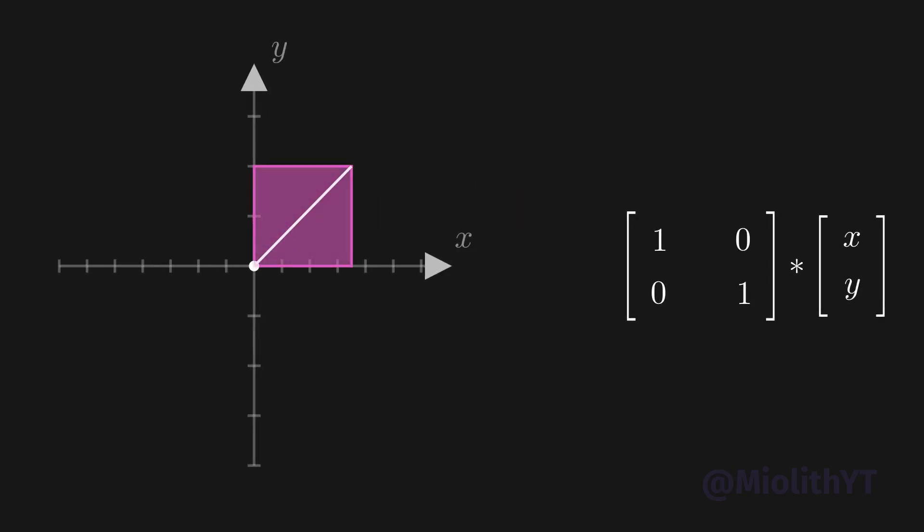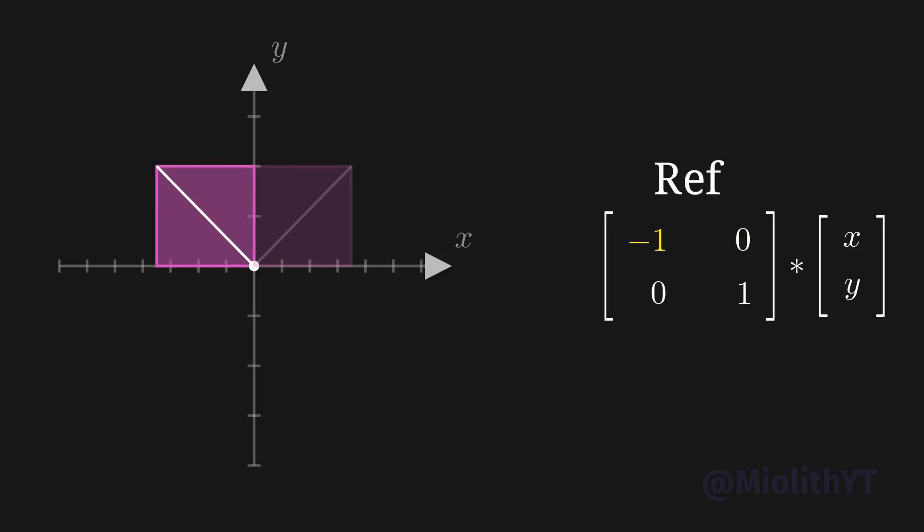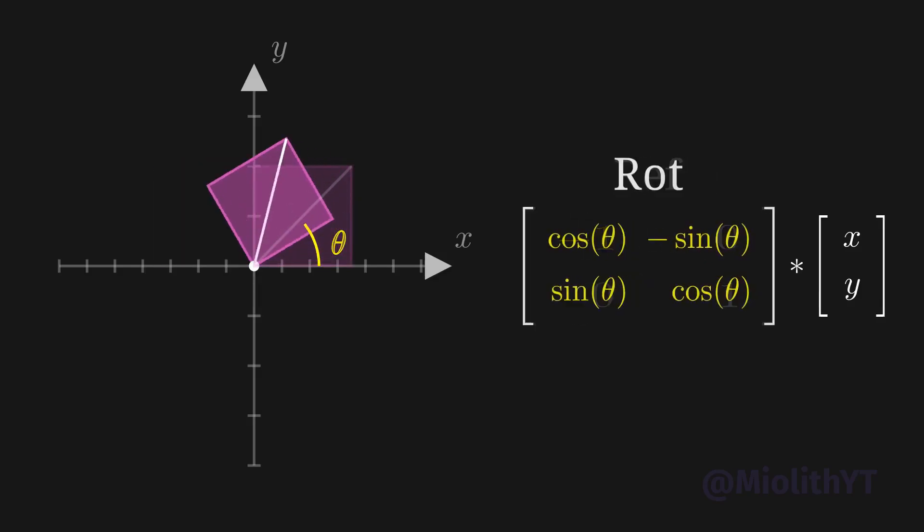But before we jump into it, let's revisit the two coordinate system in 2D to understand its limitations. With magic from linear algebra, there are multiple ways to transform your 2D objects with 2x2 matrix multiplication. You can scale it along the X and Y axes, shear it, reflect it, and rotate it.